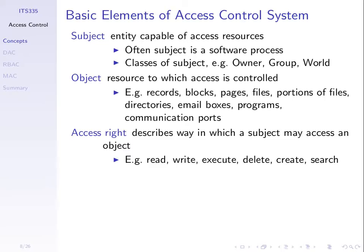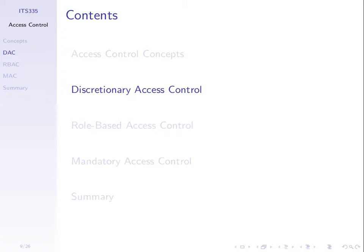Generally, we talk about subjects — the users — and objects — the resources — the things we want to control access to for which users. We usually give subjects some access right, some right to use some object, or a permission to execute a file. The subjects are often classified into owners, groups of users, and the world meaning all users on the system. There are different types of objects and access rights depending upon the computer system.